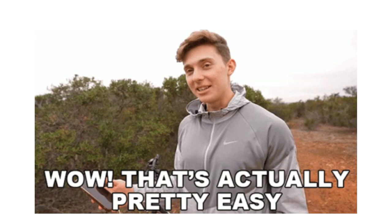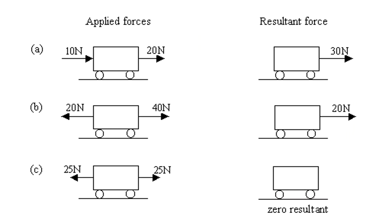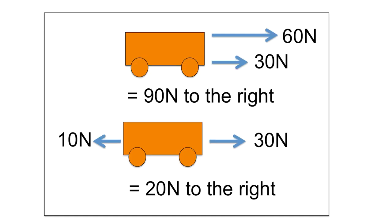Calculating resultant forces: if forces go in the same direction, add them — 10 + 20 = 30 N. If in opposite directions, subtract — 40 − 20 = 20 N. If equal and opposite — 25 − 25 = 0 N — the resultant force is zero, meaning the object travels at constant velocity or stays still.